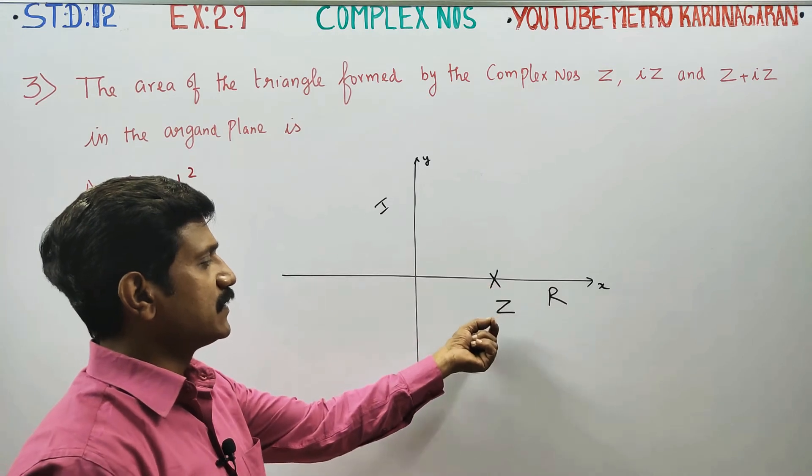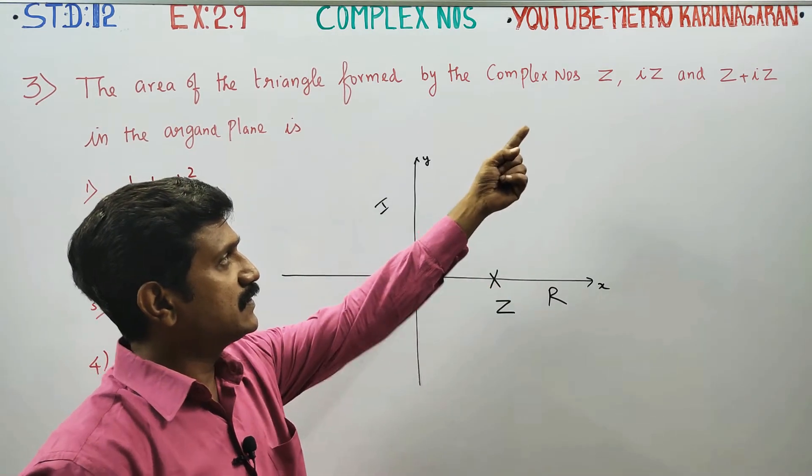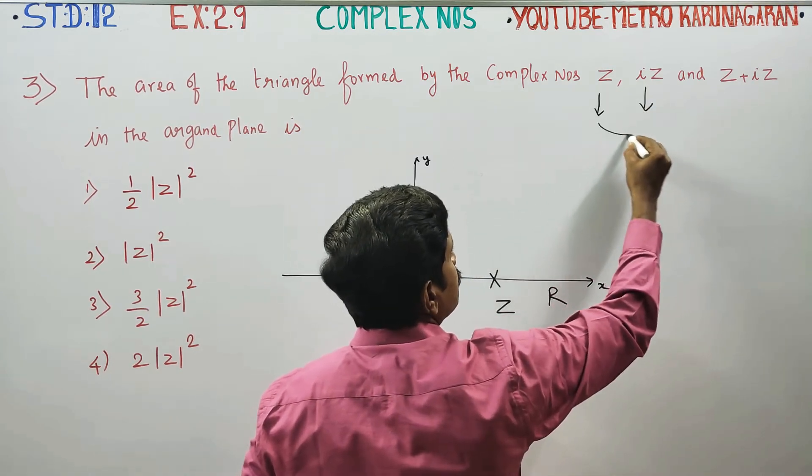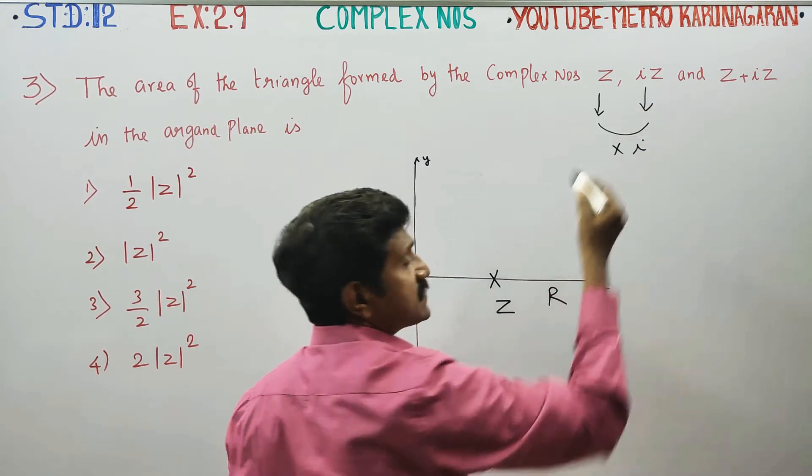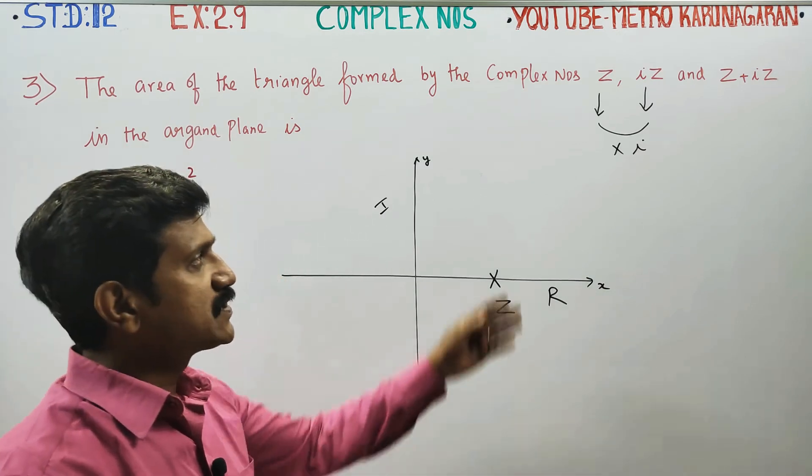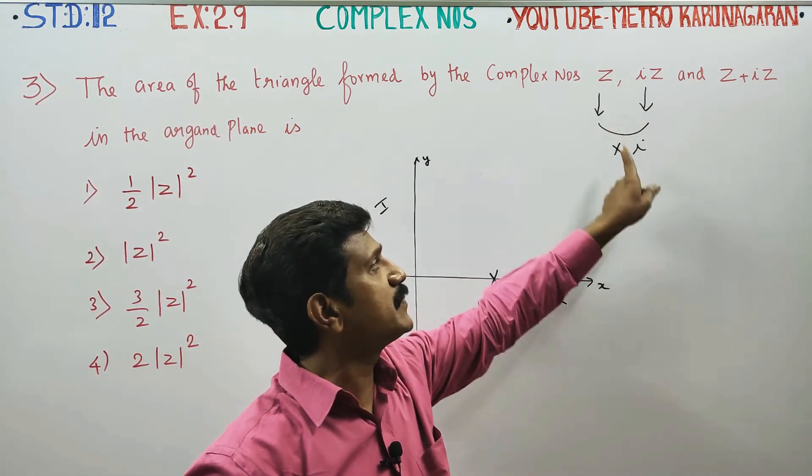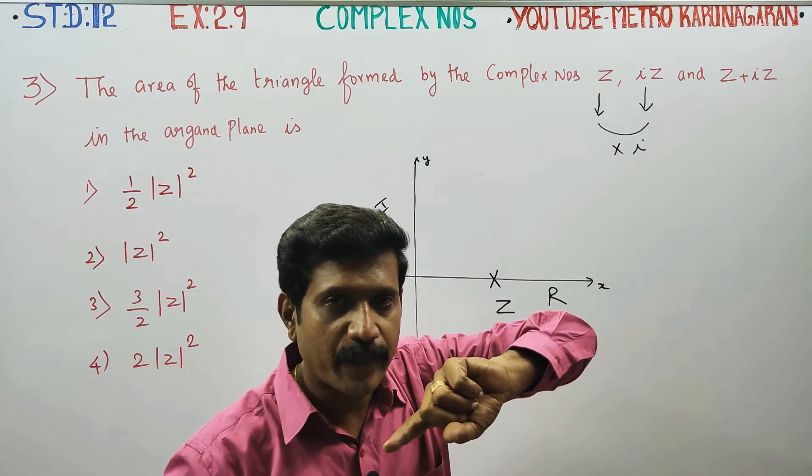Complex number represents the first one Z, second one IZ. IZ is the same as Z. Complex number is the geometrical meaning of multiplication of I.